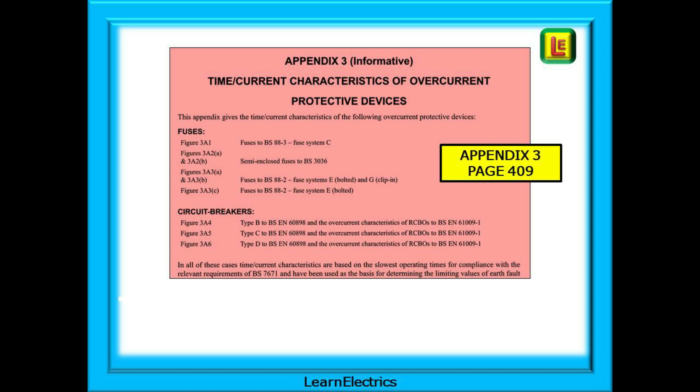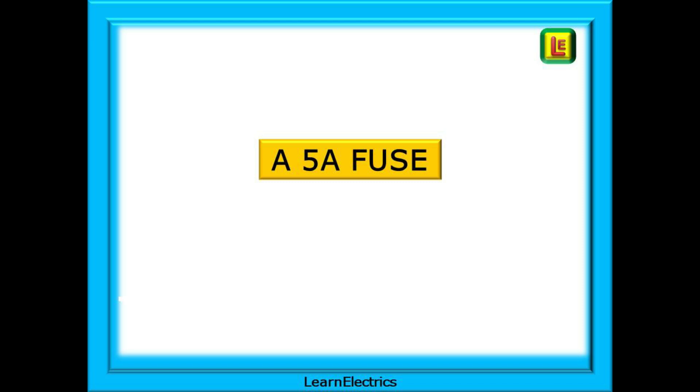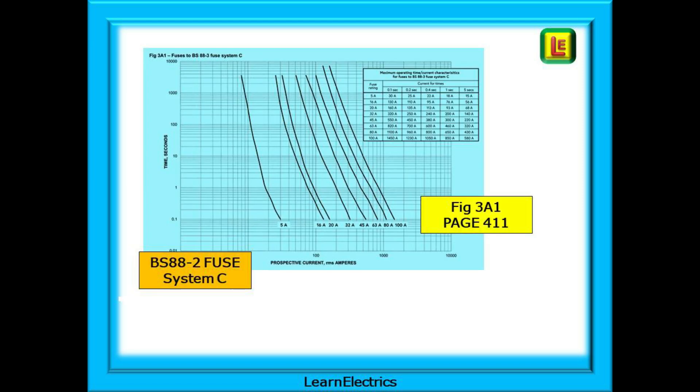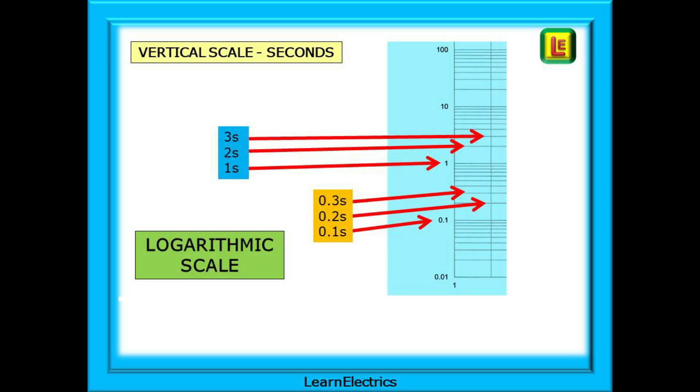We will be using the charts and tables that are shown in appendix 3 of the wiring regulations. If you have the 18th edition amendment 2 book then turn to page 409 and we can begin by looking at a 5 amp fuse. In this case it's a BS88-2 fuse system C and this chart is found on page 411. The scales on these charts are what is called logarithmic. The scales are non-linear and they jump up in multiples of 10. Shown here is a vertical scale the time in seconds. Take 0.1 seconds as shown. The next line is 0.2 seconds then 0.3 and so on in tenths of a second intervals up to 1 second.